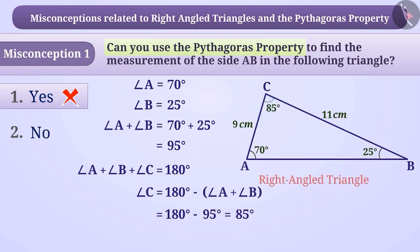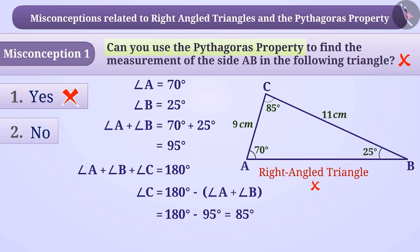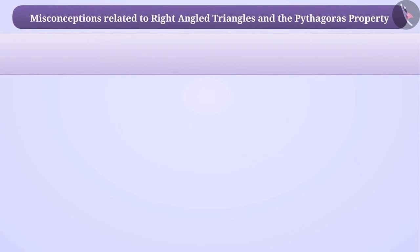Since none of the angles here is a right angle, the triangle shown here is not a right-angled triangle. Since this is not a right-angled triangle, we cannot use the Pythagoras property. Here, the correct answer is option 2.